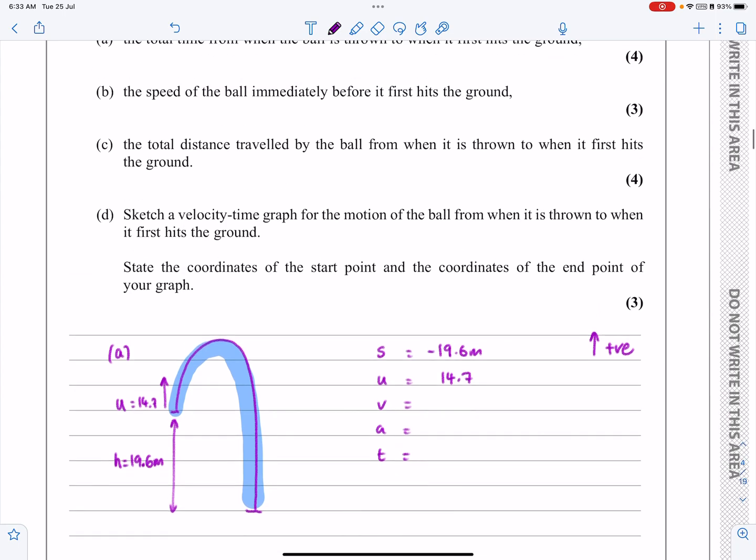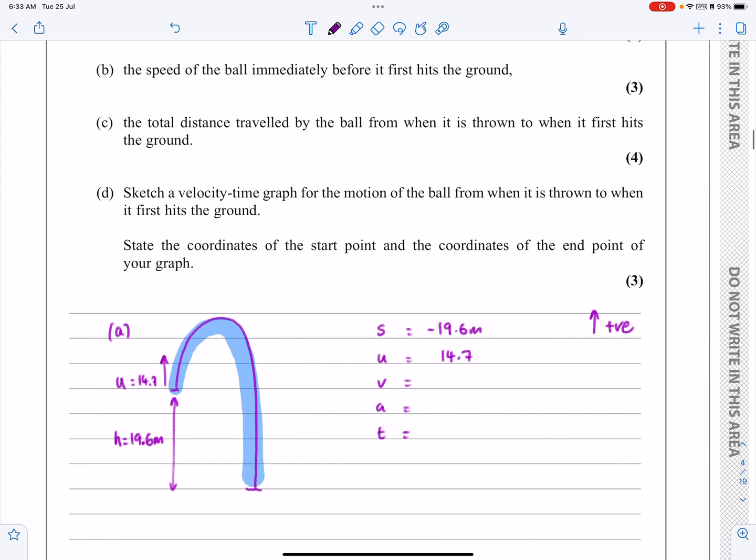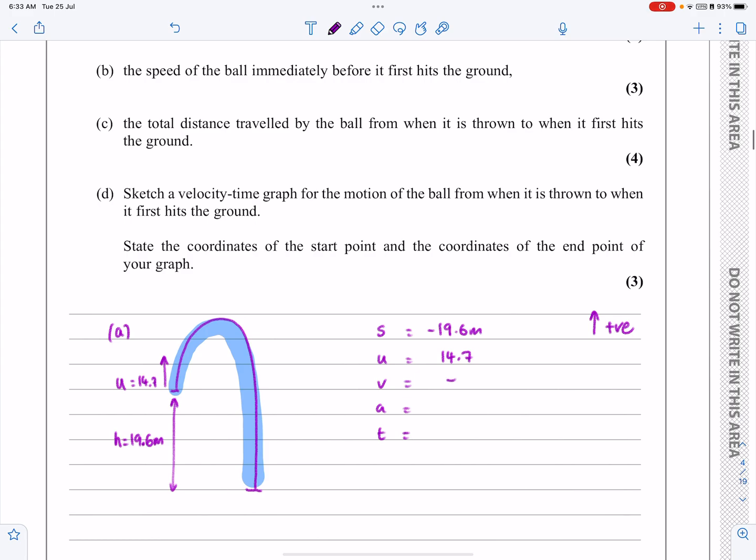V, the final velocity, what are we looking for? We're looking for the total time. So V is not involved in this question at the moment. A, if I'm taking upwards as positive, then A is going to be minus 9.8. It is a deceleration. It is slowing the ball down and then obviously getting it to go downwards below the initial point after some time there. And T, T is what we're looking for.